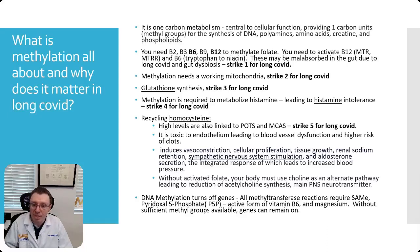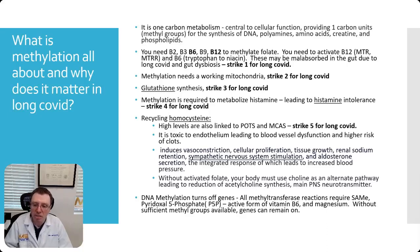Strike number four: you need methylation to metabolize histamine. If you can't methylate properly, histamine can accumulate. And regarding homocysteine — if you're not methylating, homocysteine can start to accumulate in your blood and this can lead to a lot of problems. It's been linked to formation of POTS and MCAS — strike five. It is toxic to endothelium and can lead to high risk for clots. It can induce vasoconstriction, cause issues with sympathetic nervous system stimulation, and increase blood pressure.